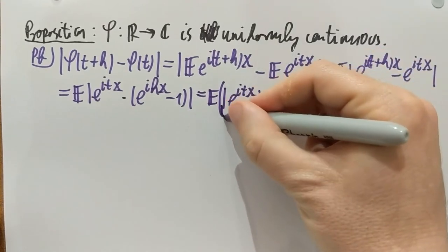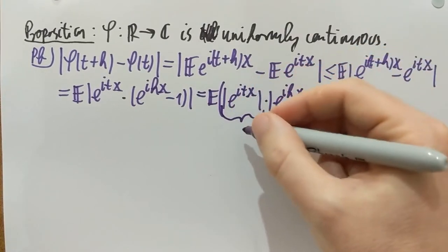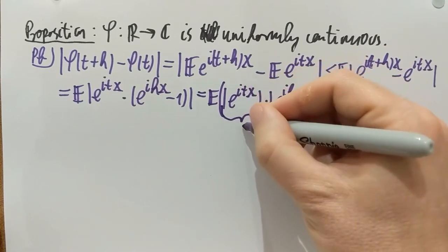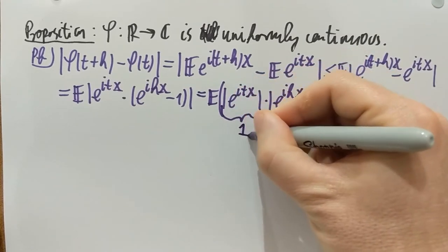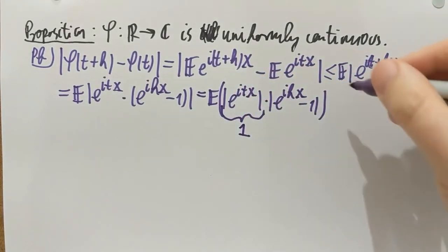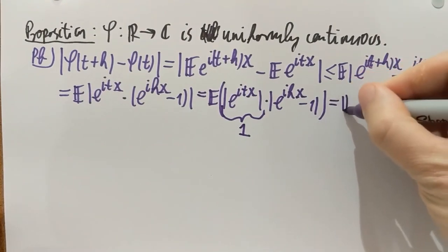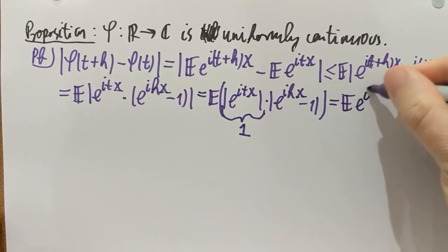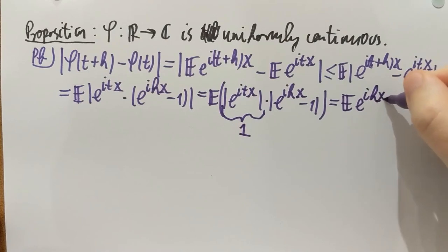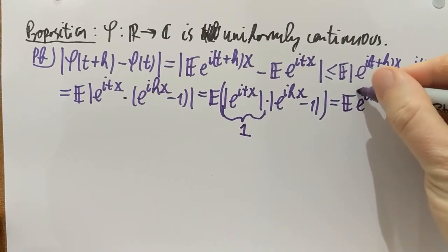However, this guy—t is real, x is real. This guy is always of length 1. So, its mod is always 1. And therefore, I get the expectation of exponential i·h·x minus 1 only under the mod.